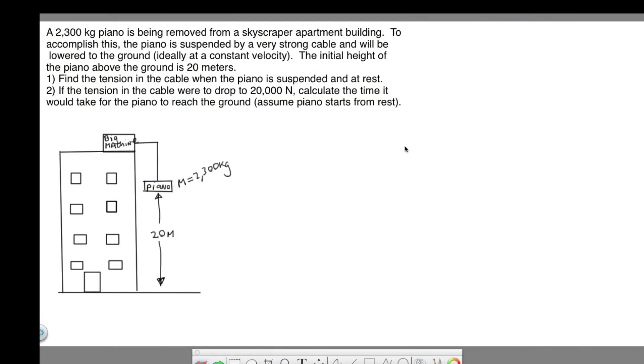Here we have a force problem involving a piano being lowered from the side of a building. The mass of the piano is 2,300 kilograms, a very large object. On the top of the building, I'm calling this the big machine which is holding this piano up. Force in a rope or cable is referred to as tension, so the force in this rope here is going to be tension.